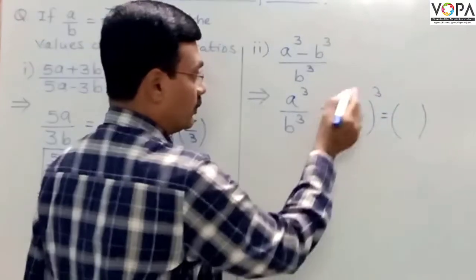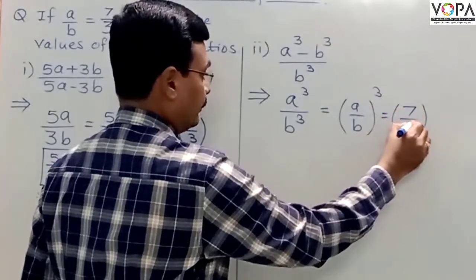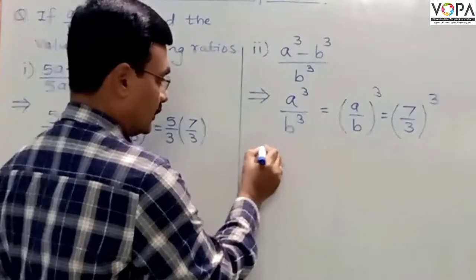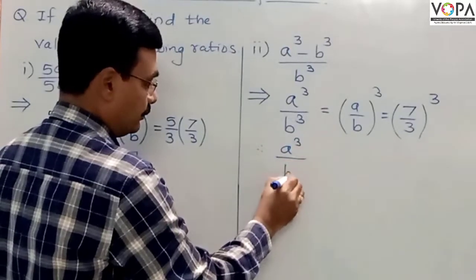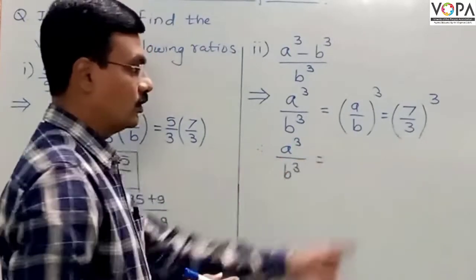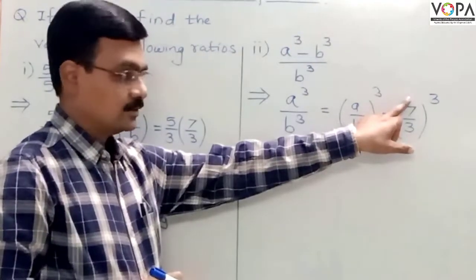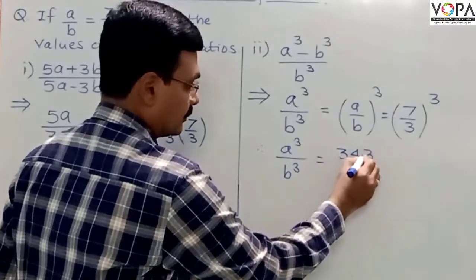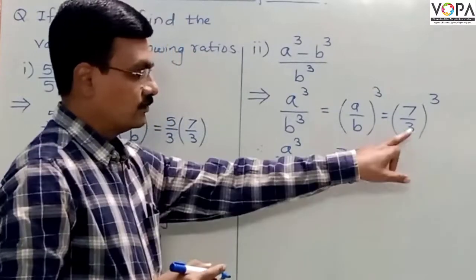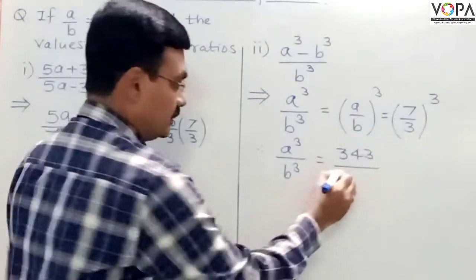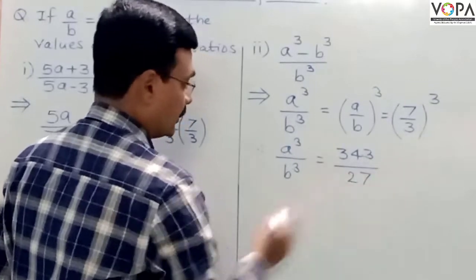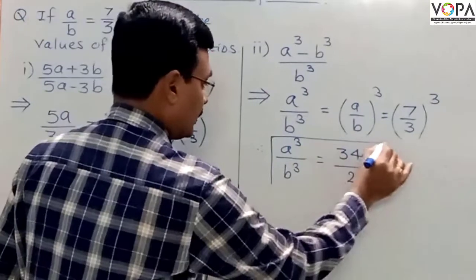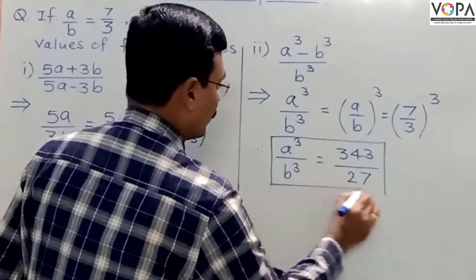We put the value of A upon B, which is 7 upon 3, and take its cube. Therefore, A cube upon B cube equals cube of 7 upon cube of 3. Cube of 7, that is 7 multiplied 3 times, is 343. Cube of 3, that is 3 multiplied 3 times, is 27. Therefore, A cube upon B cube equals 343 upon 27.